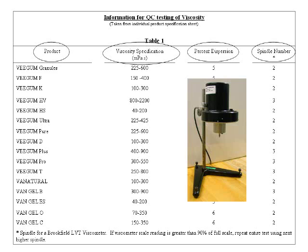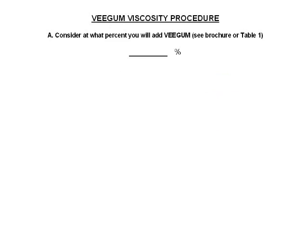If the viscometer scale reading is near or beyond the field, the tester can change the spindle so a proper reading can be obtained on scale. To begin the procedure, the tester must first perform some calculations so the correct amount of clay can be evaluated. The first step is to locate and use the percent listed for the particular grade being tested.